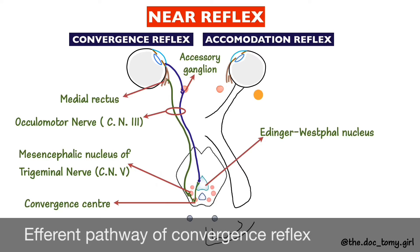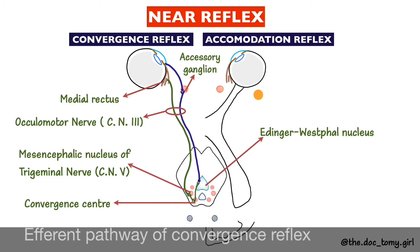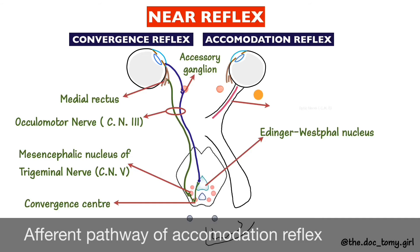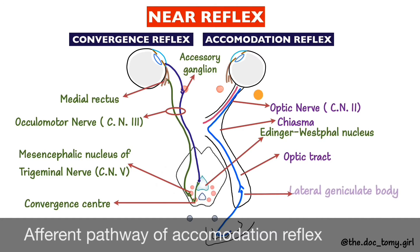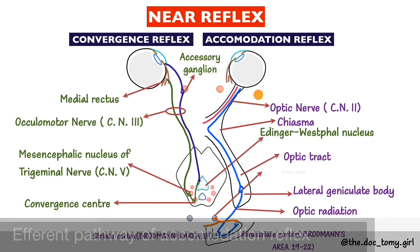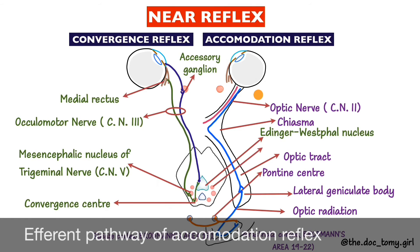The pathway of the accommodation reflex initially follows the visual pathway. The impulses are carried by afferent fibers from the retina to the optic nerve, optic chiasma, optic tract, lateral geniculate body, optic radiations, and to the striate cortex. These are then relayed to the parastriate cortex.